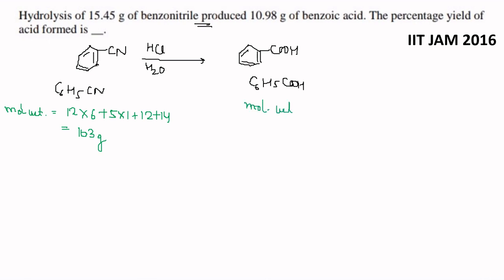Ab benzoic acid ka molecular weight: that is equal to 12 into 6, plus 5 into 1, plus 12, plus 2 into 16, plus 1. So yahan se jab calculate karenge, this comes out to be 122 gram.